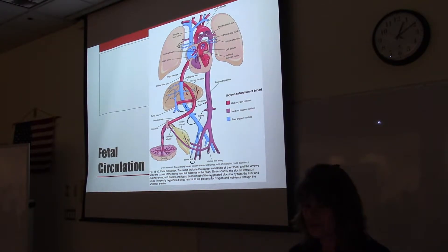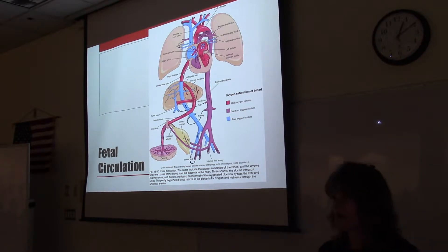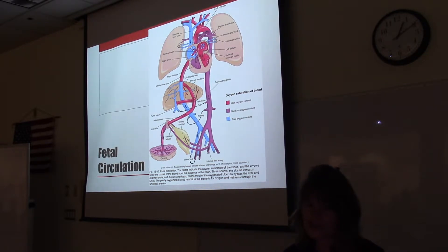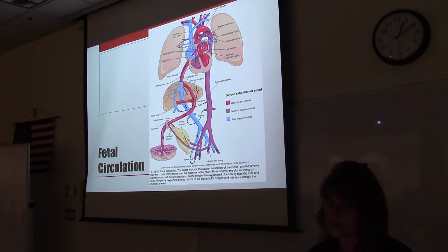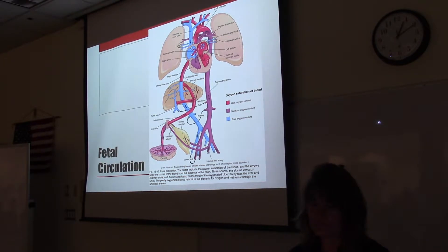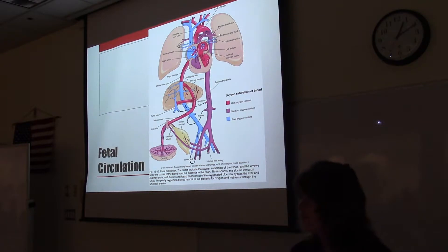There's a shunt past the liver — the ductus venosus will shunt blood past the liver, because the mom's liver has already detoxed and filtered the blood. Then the blood continues back to the right atrium. Blood returning from the superior vena cava goes to the right ventricle, and blood that gets into the right ventricle gets pushed into the pulmonary artery. Some of it will travel to the lungs — very little, about 10% — and the rest will shunt past the lungs and go through the ductus arteriosus into the aorta.